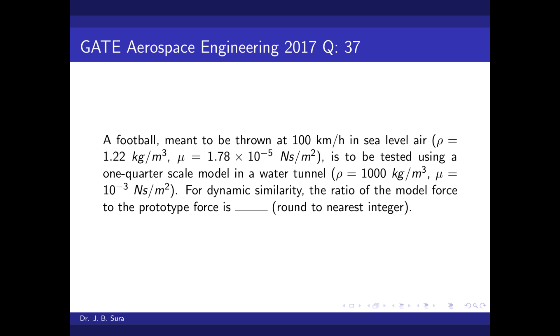The question is: a football meant to be thrown at 100 km/h in sea level air where ρ = 1.22 kg/m³, μ = 1.78 × 10⁻⁵ Ns/m², is to be tested using a one-quarter scale model in a water tunnel.